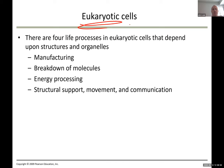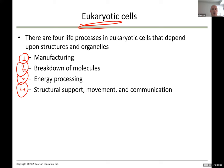Eukaryotic cells are more complex and have more chemical reactions taking place inside. These cells depend on structures and organelles to carry out all their functions. These functions can be classified into four categories: manufacture, breakdown of molecules, energy processing, and structural support, movement, and communication.